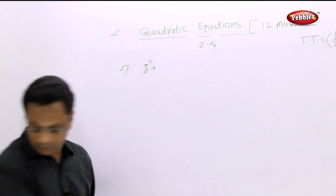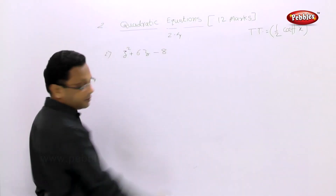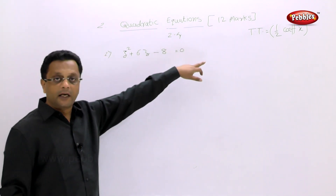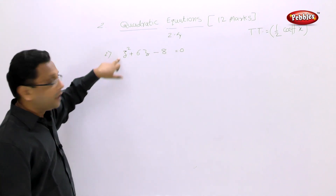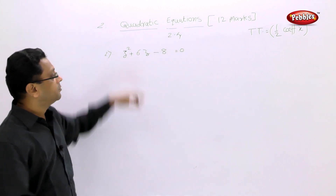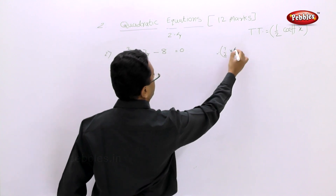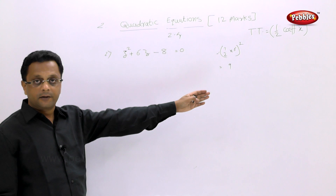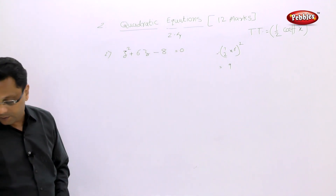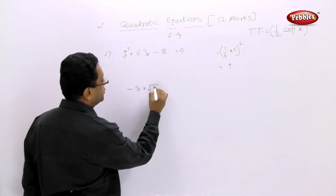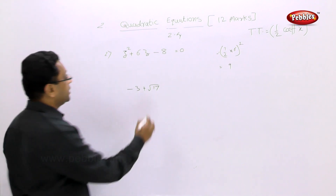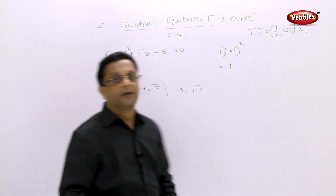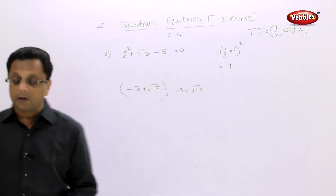Second example: z² + 6z - 8 = 0. Take minus 8 to the right side — it becomes plus 8. There is no coefficient on z², so find the third term: half of 6 squared = 9. Add 9 to both sides. The answer is minus 3 plus root 17 and minus 3 minus root 17, which we can write as minus 3 ± root 17. Complete the example and check the answer.